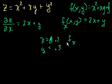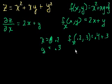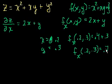we could use this, the partial derivative of f with respect to x at the point 0.2, 0.3 is equal to 2 times x, so it's 0.4, plus y, plus 0.3. So the slope of this function with respect to x at the point 0.2 comma 0.3 is equal to 0.7.